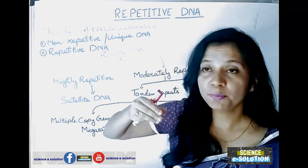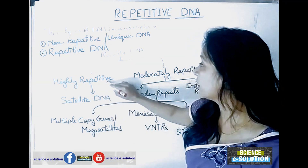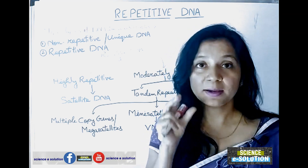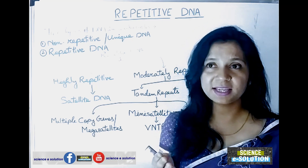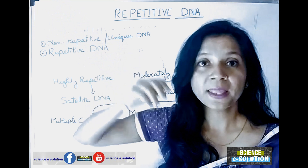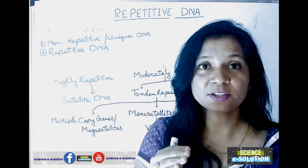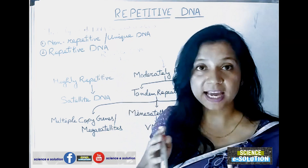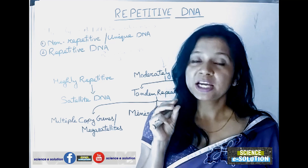Repetitive DNA is of two main types: highly repetitive DNA and moderately repetitive DNA. Highly repetitive DNA, as the name suggests, consists of short nucleotide sequences — for example, five to five hundred base pairs. These short sequences are repeated more than ten to the power of five copies throughout the genome. This type of DNA is found mostly in the heterochromatic regions of chromosomes, that is, in the centromeric portion of the chromosome.